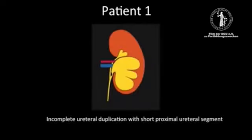This 63-year-old male presented with intermittent left-sided flank pain. Ultrasound revealed a dilated pelvicalyceal system and renal scintigraphy confirmed an obstruction. Retrograde examination shows a duplex kidney with incomplete ureteral duplication and a lower pole UPJO in proximity to the ureteral junction.